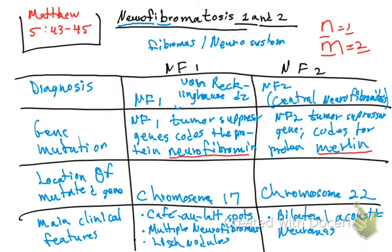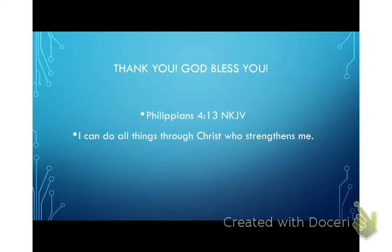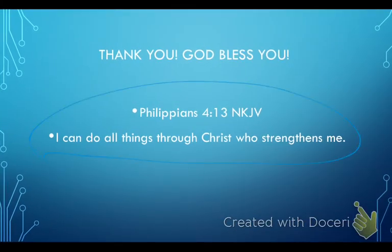One more key point: what do neurofibromatosis type 1 and type 2 have in common? Both are autosomal dominant. That's pretty much what we should learn about neurofibromatosis type 1 and type 2. Thank you so much for watching, and remember we can do all things through Christ who strengthens us. God bless you.